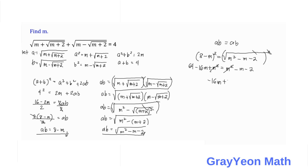The m squared terms cancel. We get m equal to negative 64 minus 2, giving us negative 15m equals negative 66. Simplifying further, m equals negative 66 divided by negative 15. The negatives cancel, and dividing both by 3, we get 22 and 5. So m is equal to 22 over 5, and that is our answer.